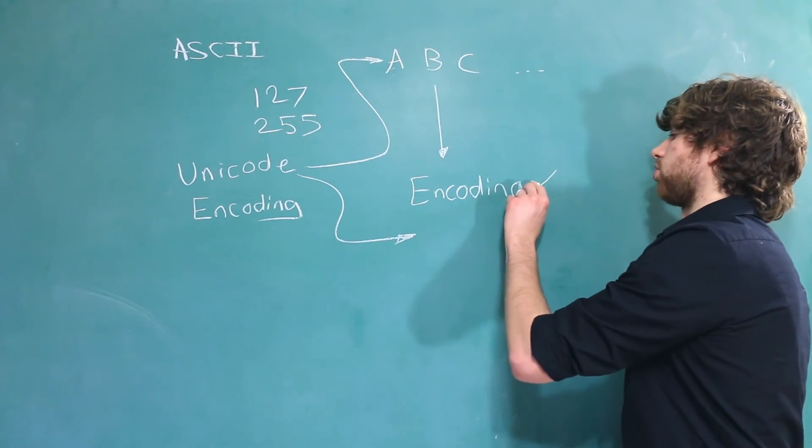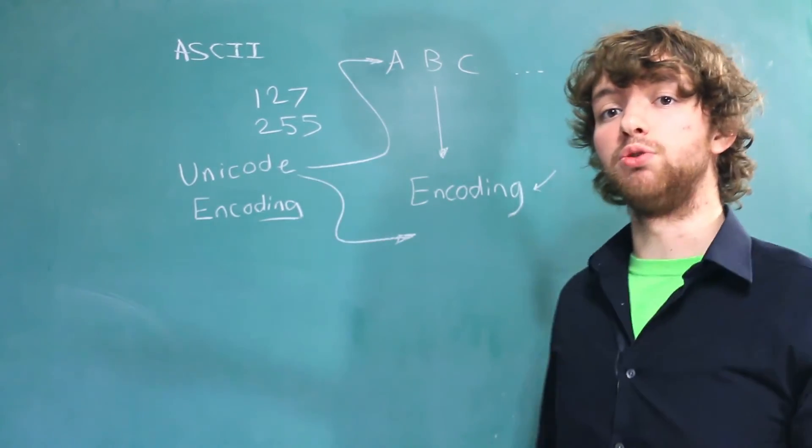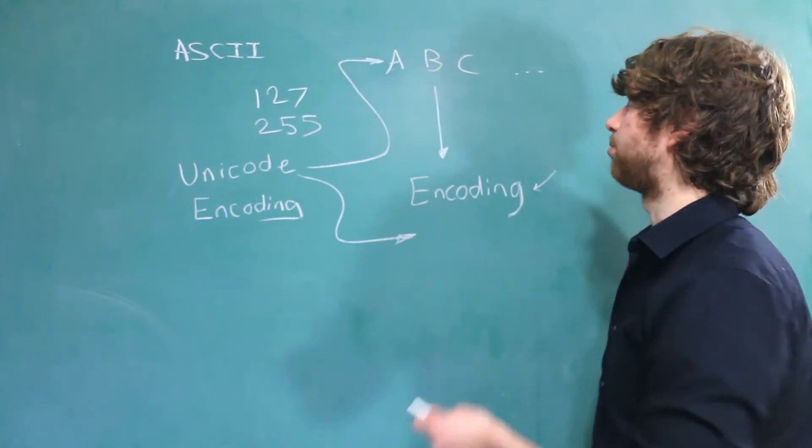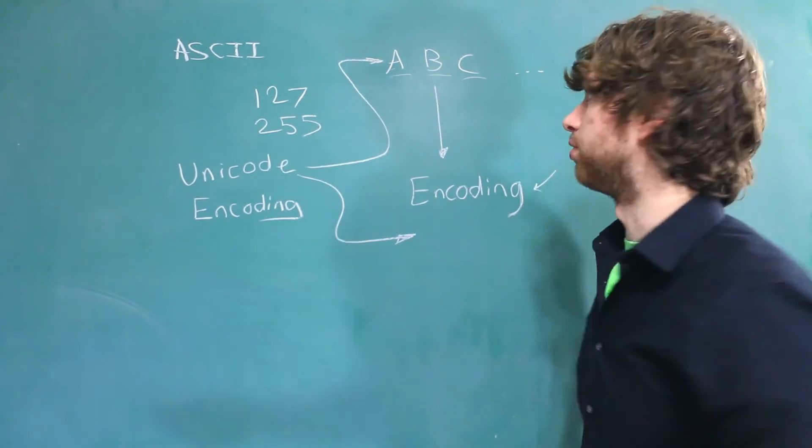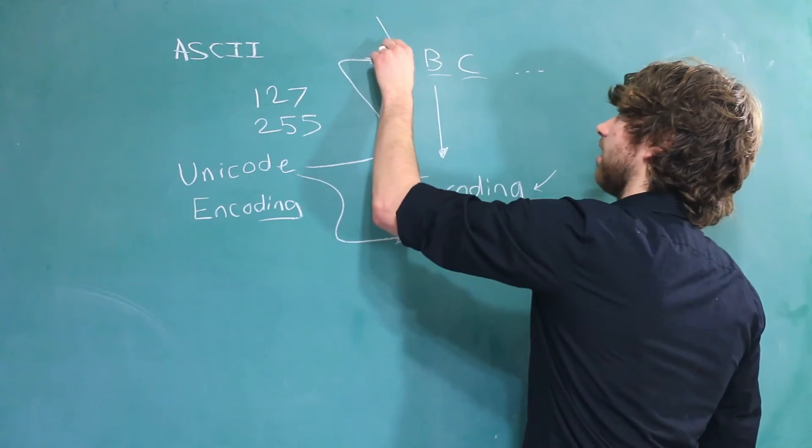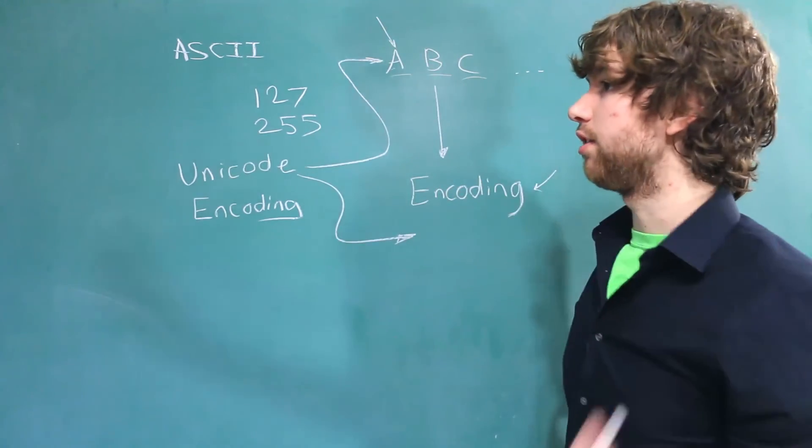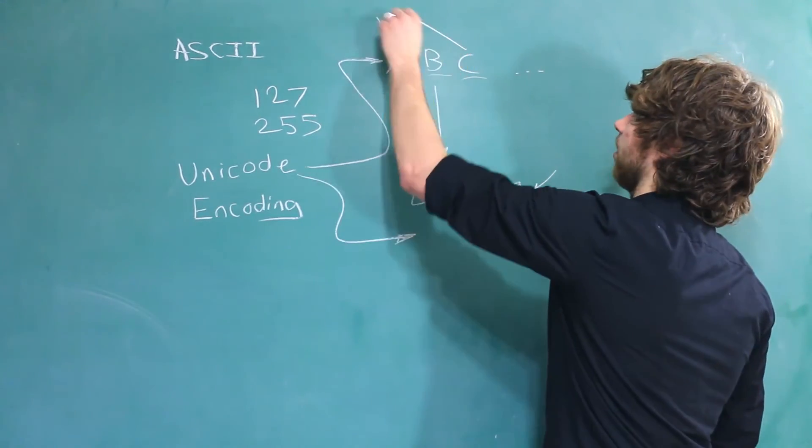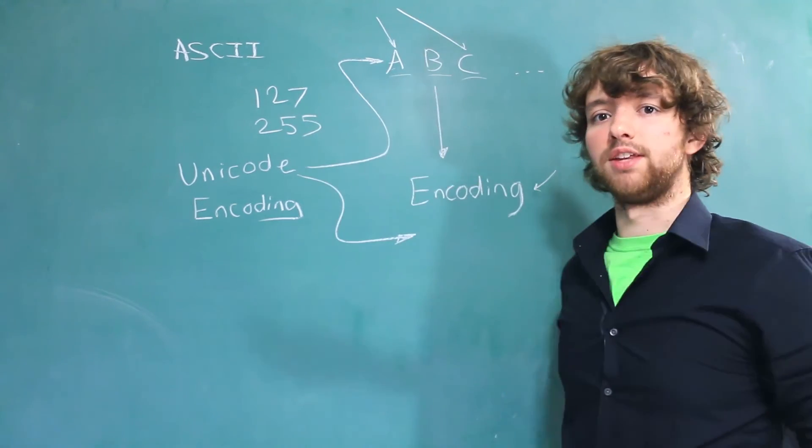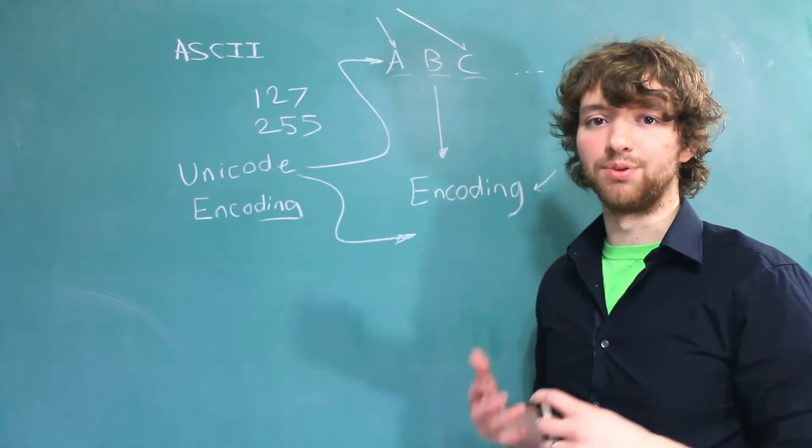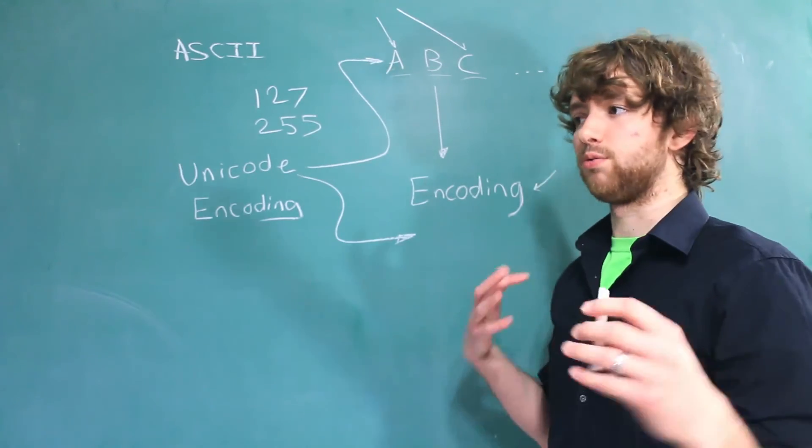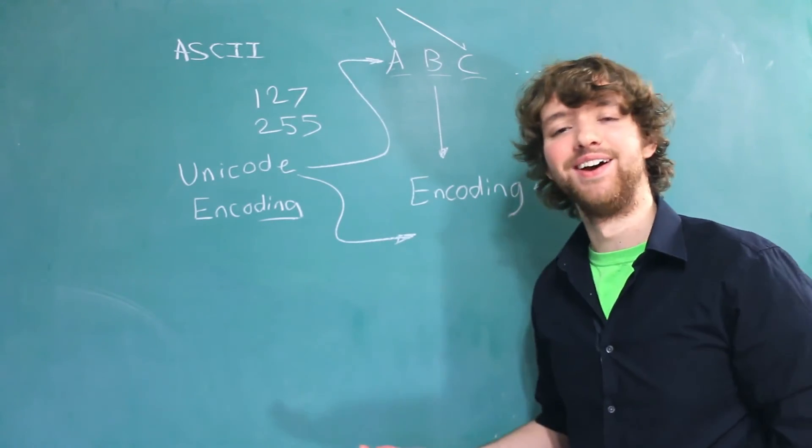The reason encodings are so important is so that computers can communicate with one another. It's not enough to say that you can use these characters, because one computer might say this character is some code and another computer might say this character is a different code. Then you get this flip-flopping of characters, and when that starts to happen, you get weird things like random question marks and all that stuff.